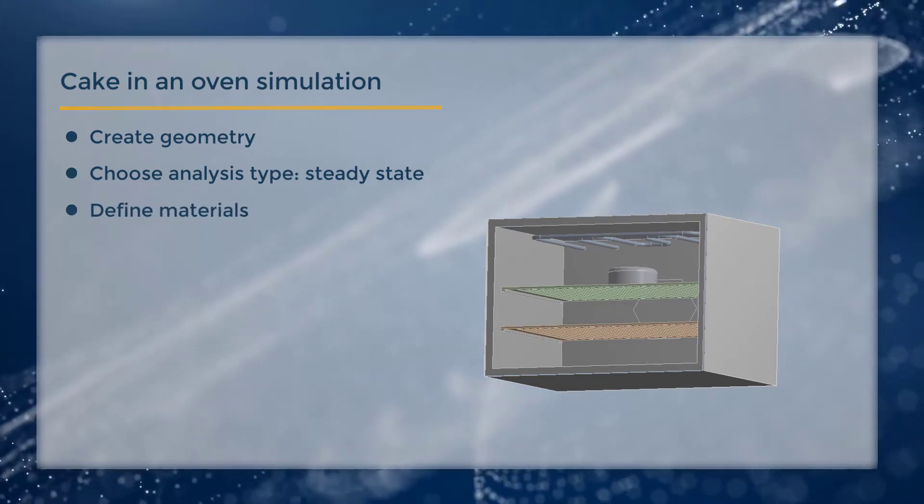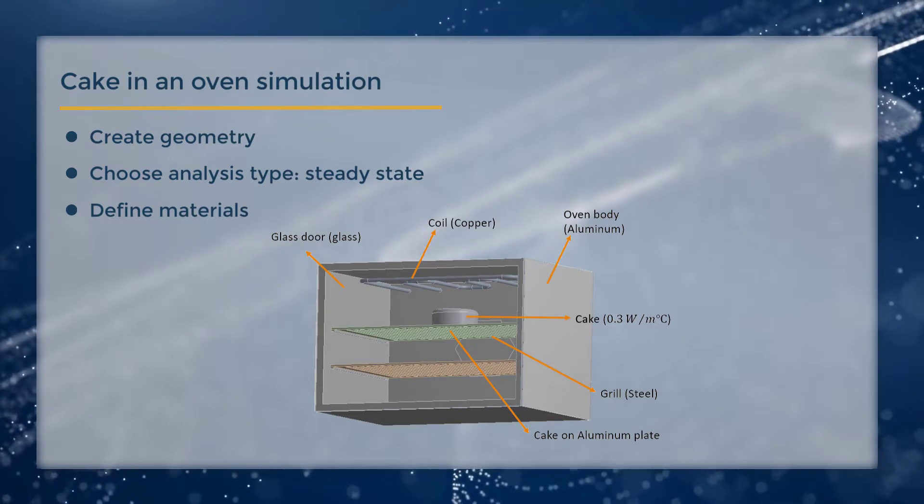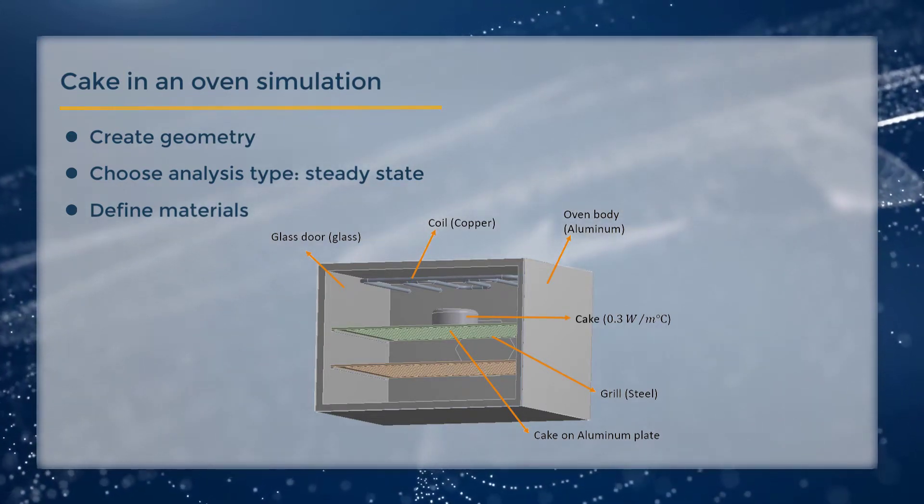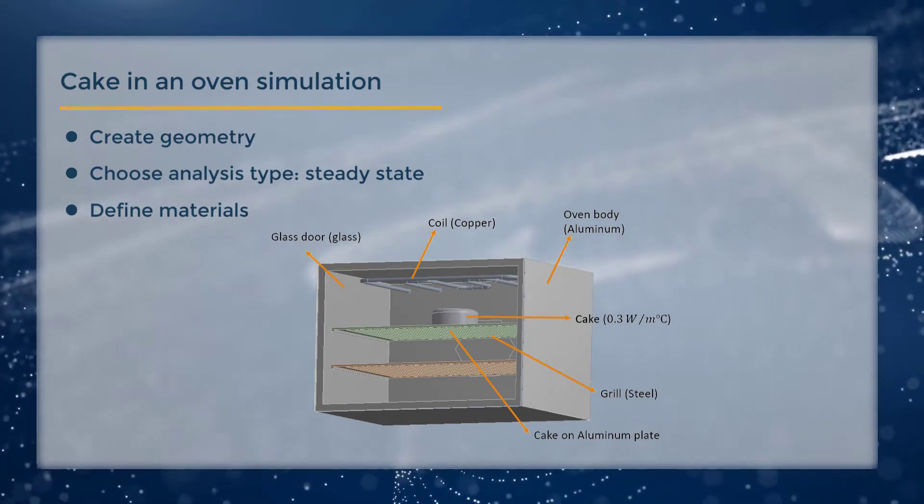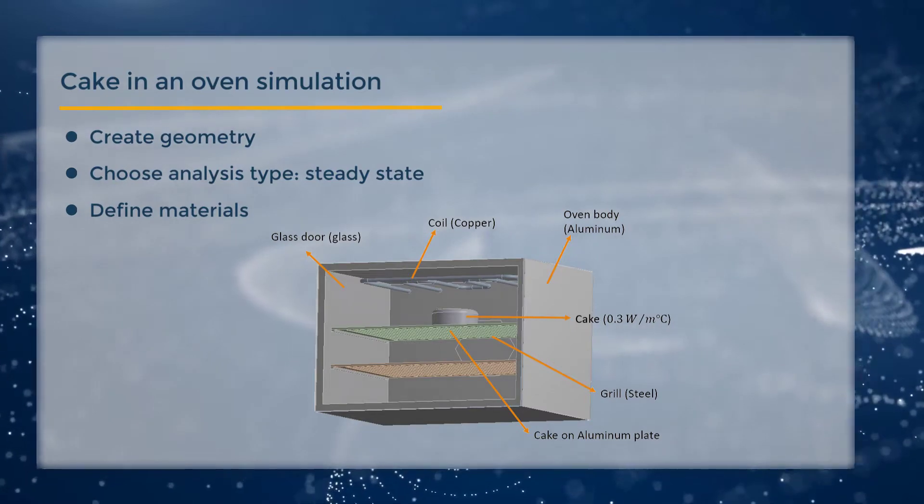For materials, many sample materials are available in ANSYS engineering database, and we'll just pick from there. For the cake material that's not available, we'll assume a thermal conductivity of 0.3 watts per meter per degree Celsius. Now, after assigning the material to the geometry...